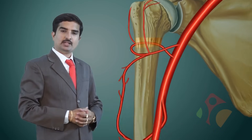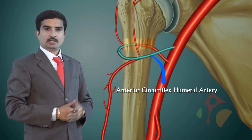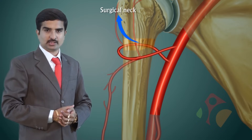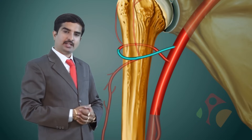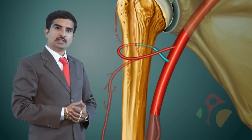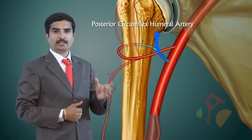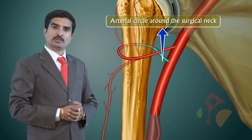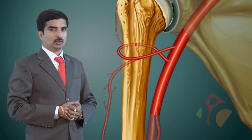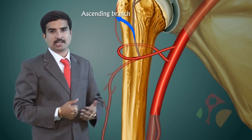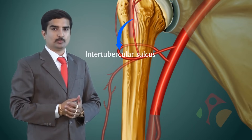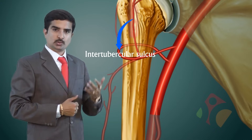The second branch is the anterior circumflex humeral artery, which winds around the anterior aspect of the surgical neck. It then runs posteriorly where it anastomoses with the posterior circumflex humeral artery to form the arterial circle around the surgical neck. Anteriorly, it gives off an ascending branch called the ascending branch of the anterior circumflex humeral artery, which runs along the intertubercular sulcus and finally supplies the shoulder joint.